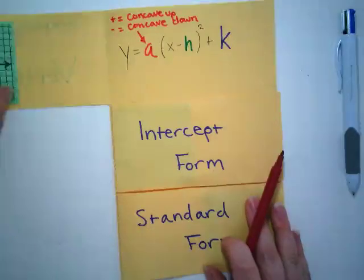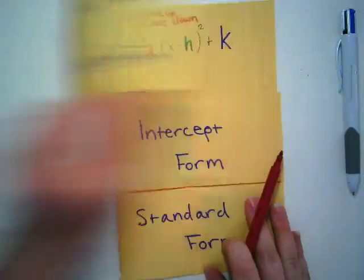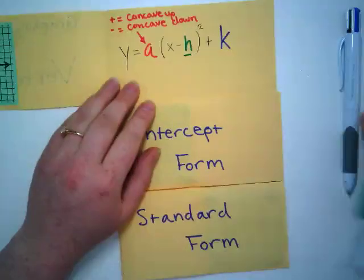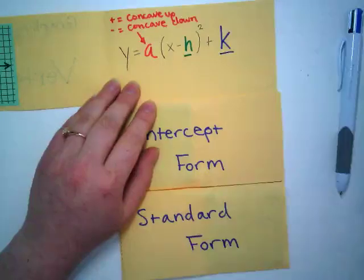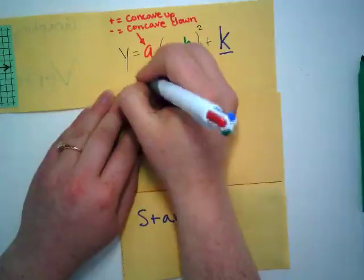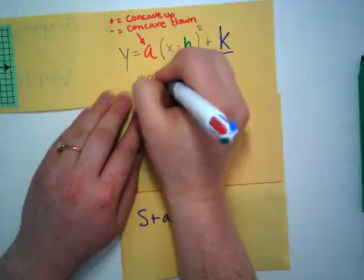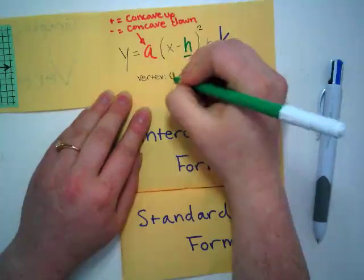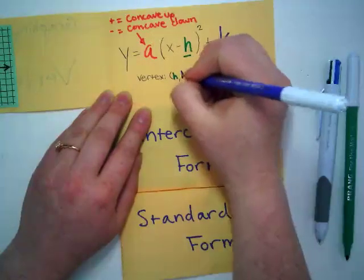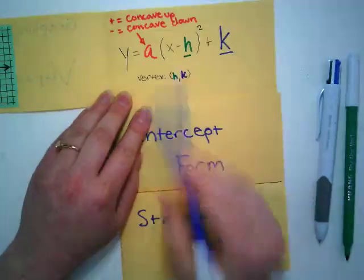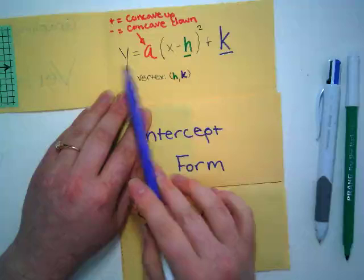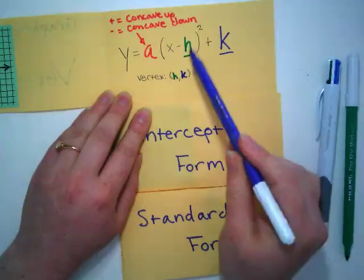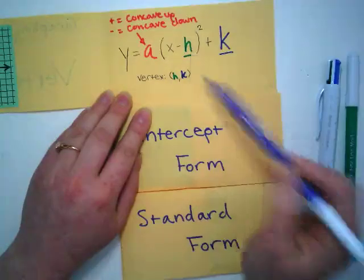This form is called vertex form because in this form we can find the vertex. Our vertex is the coordinate pair H, K. If you ever come across a quadratic written in this form, we can easily graph the vertex by looking at the H value and the K value.